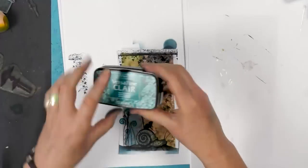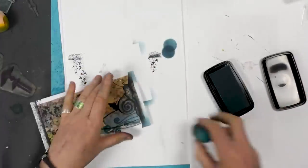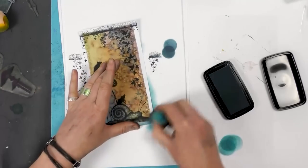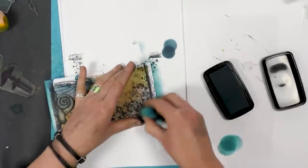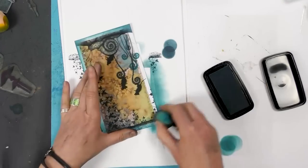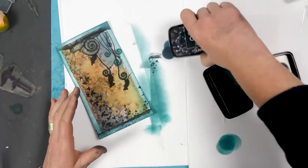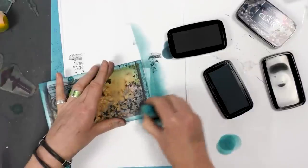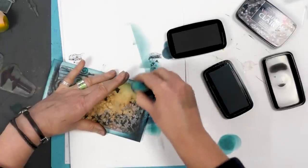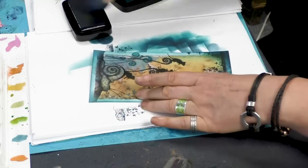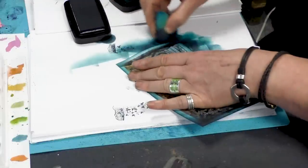So we're going to take Warm Breeze now and I'm going to go around the edge of the card. And twilight, I'm going to just bring in a little bit of depth into the top.